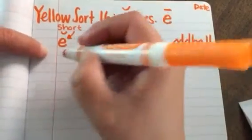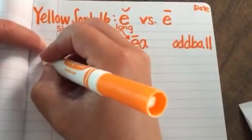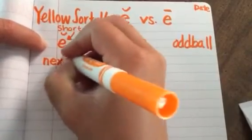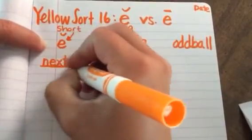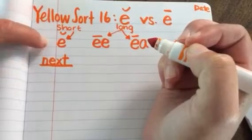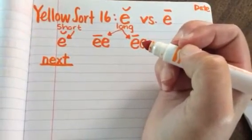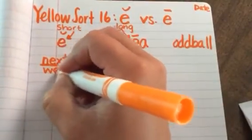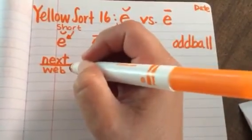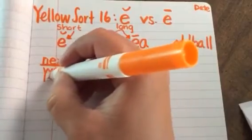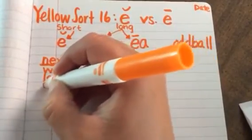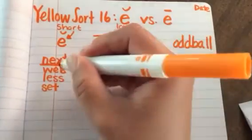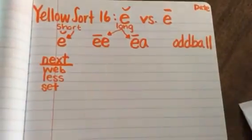Let's start with the anchor word: N-E-X-T, next. Remember that E is the E by itself. The other words are web, less, and set. Next, web, less, and set.